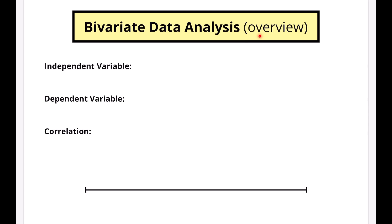Let's start this overview with: what is bivariate data? Bivariate data simply means two-variable data. That means you're looking to see if there's a relationship between two different sets of data. Univariate data — one-variable data — is when you're only analyzing one set of data. With bivariate data, you're going to plot some points on a scatter plot. This is called bivariate data analysis, or two-variable data.